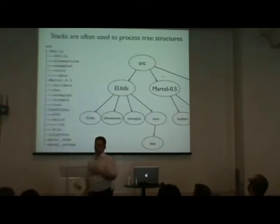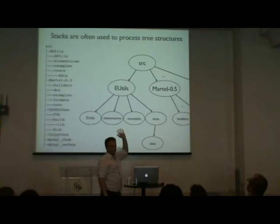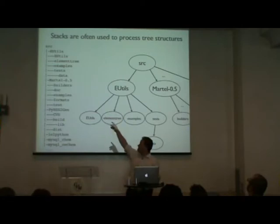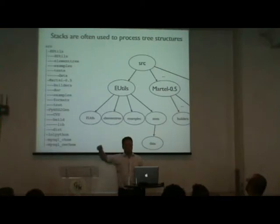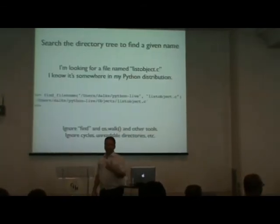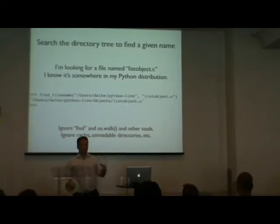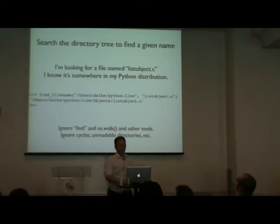I want to draw a distinction between the abstract data type — like stacks — and the actual implementation. Sometimes there's a one-to-one mapping between a Python object and a data type; sometimes it's a combination. The most common use case for a stack I can think of is working with hierarchical structures. I do a lot of chemistry with graphs and recursive descent parsing. Here's an example: a directory tree and a depth-first search traversal.